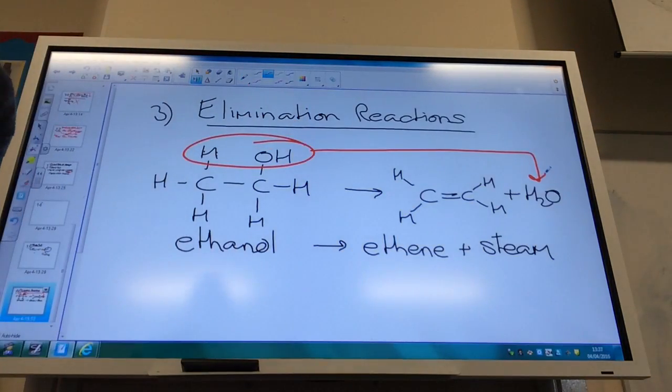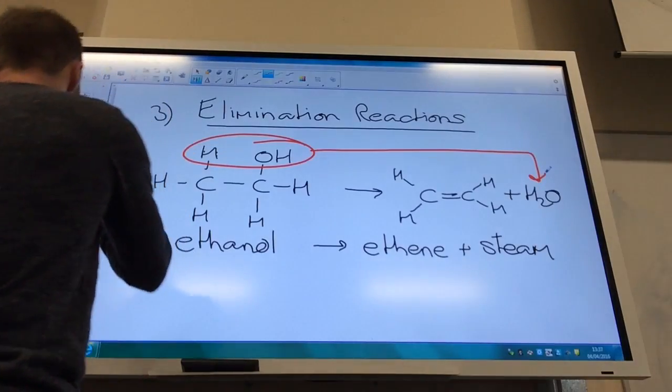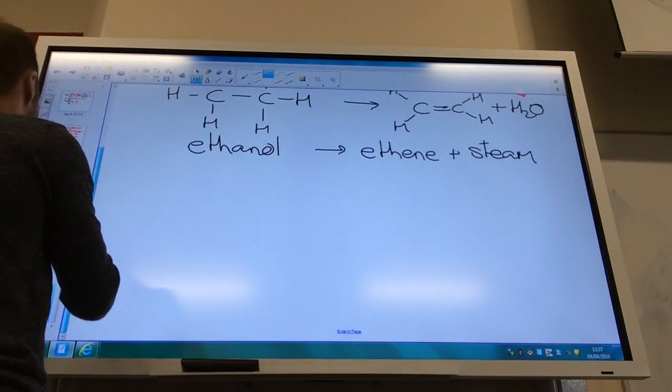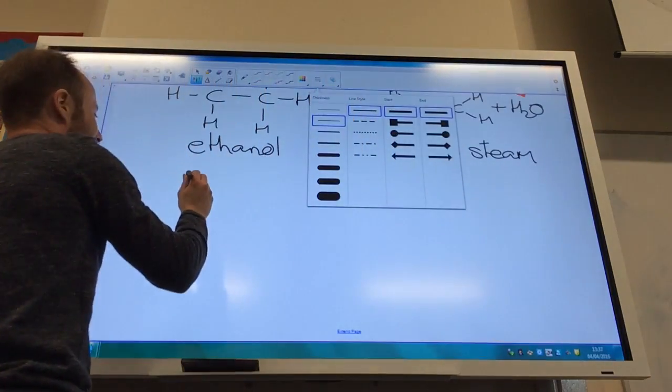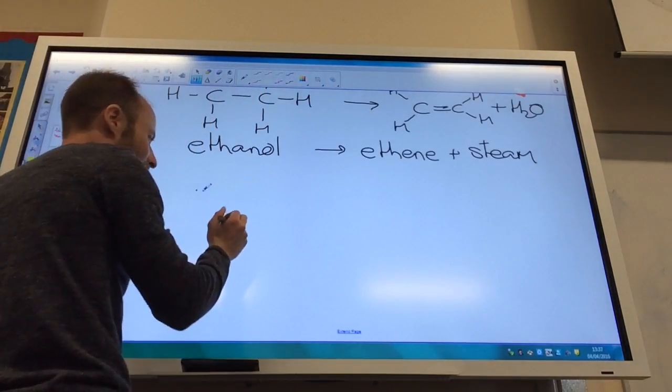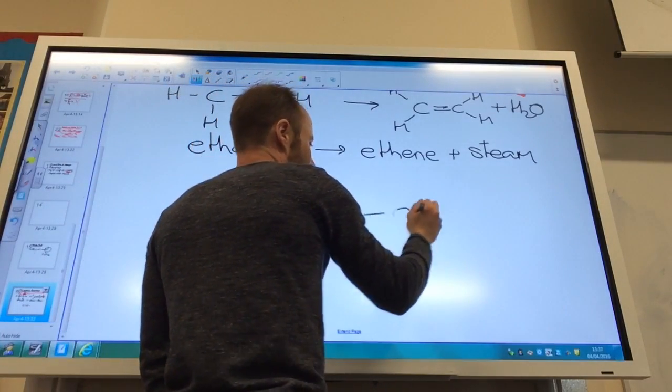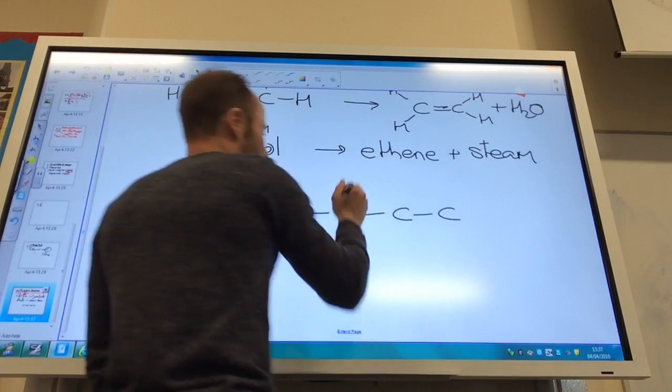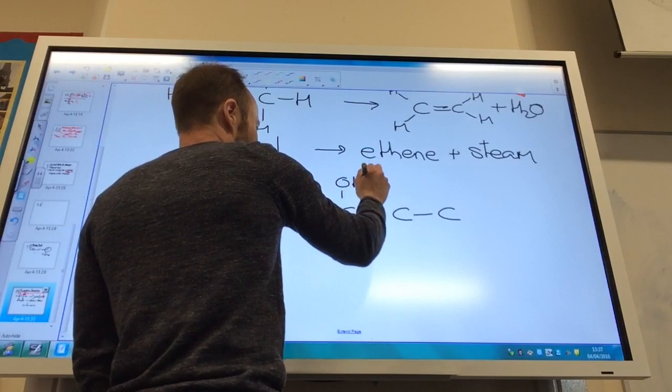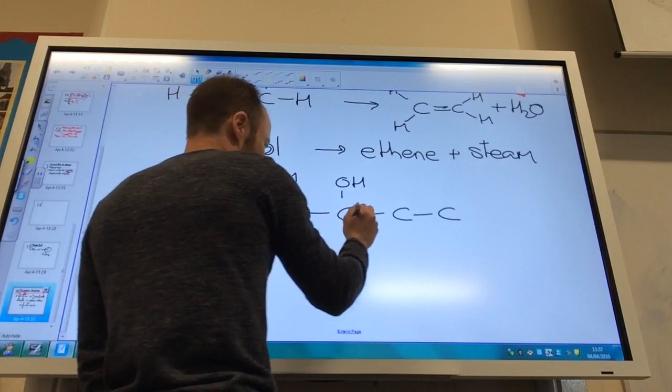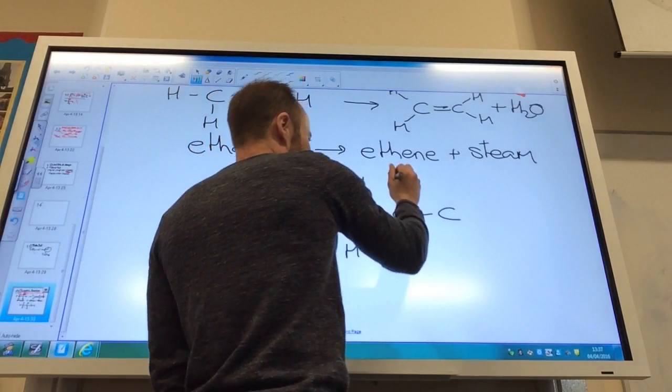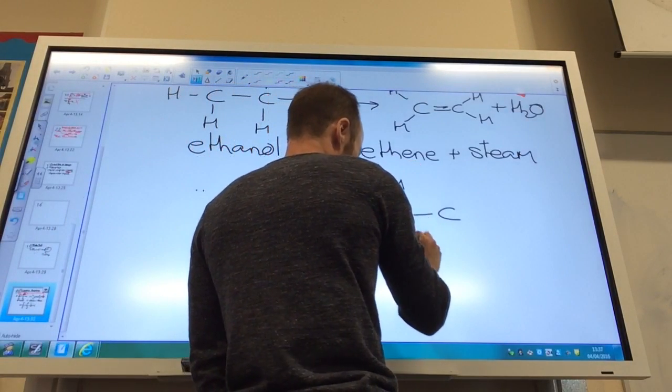So and obviously we make alkenes, they can obviously go on to make addition polymers and so on. So things to watch out for, well if you have more complicated alcohols then you can of course have different isomers which we looked at when we did the alkene topic. So let's have a look at butan-2-ol just to remind ourselves.